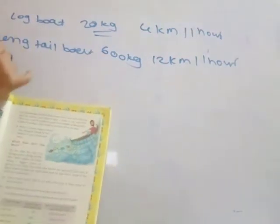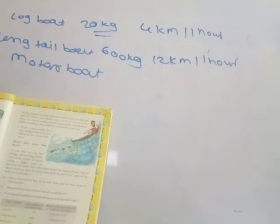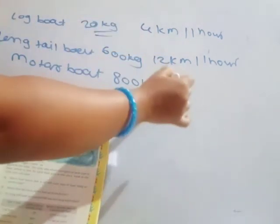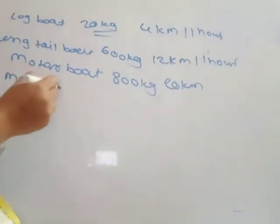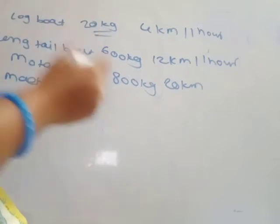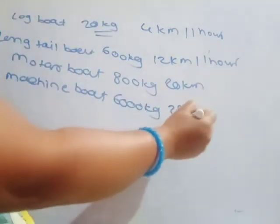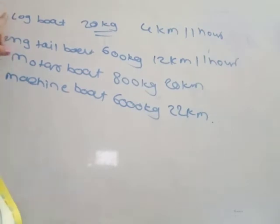The third boat is the motor boat. This motor boat catches 800 kg of fish and travels at 20 km per hour. The last boat is the machine boat. The machine boat catches 6,000 kg of fish and its speed is 22 km per hour. So the smallest boat is the log boat and the biggest one is the machine boat.